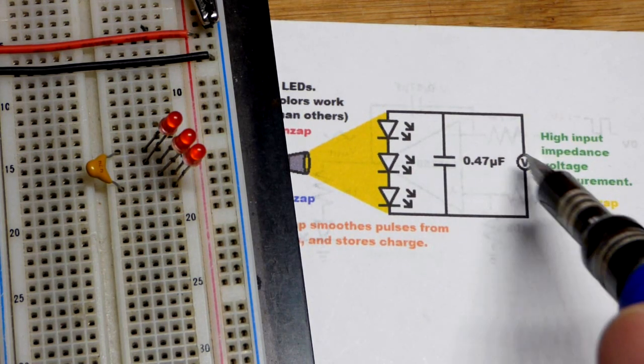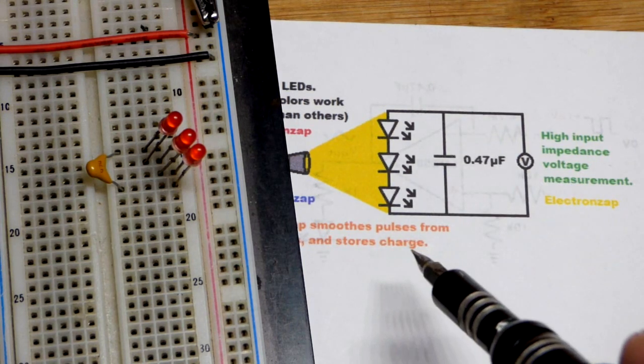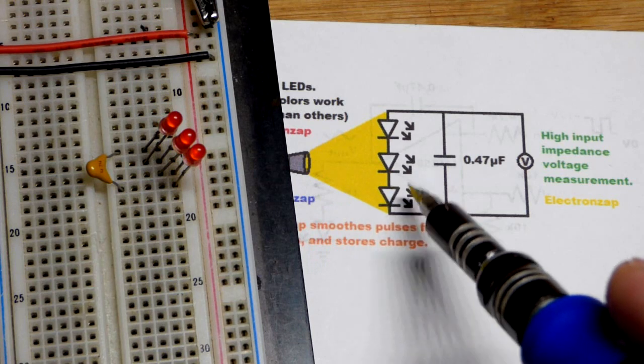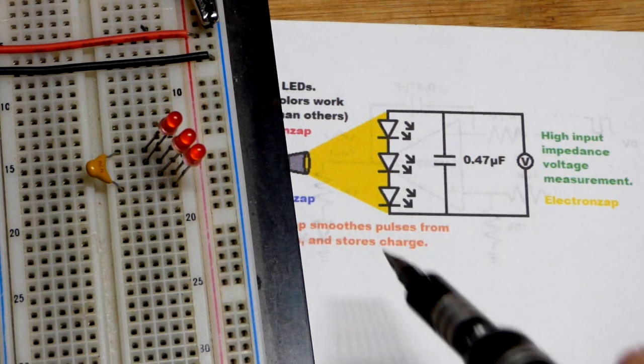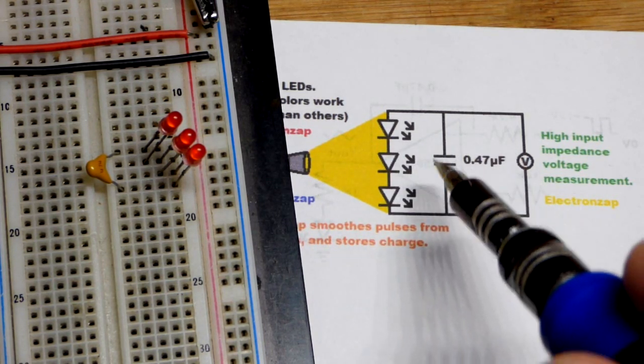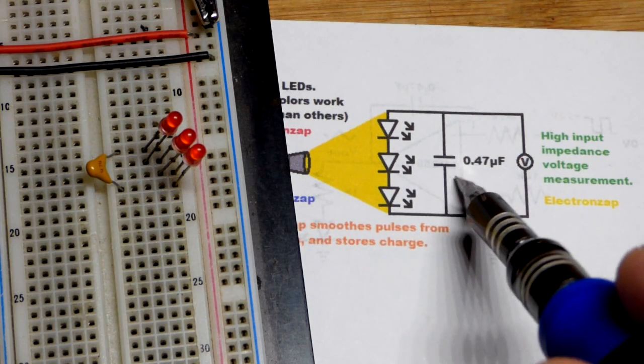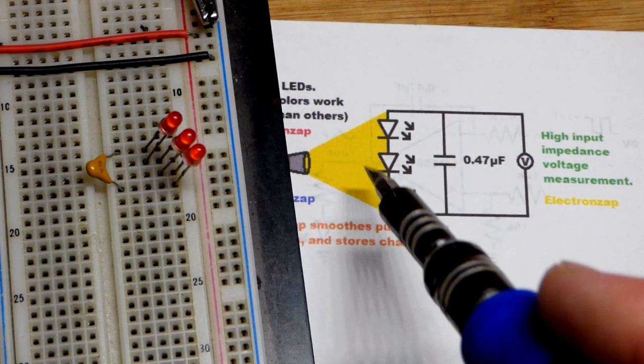So the light would charge the capacitor and it would hold the charge long enough for the oscilloscope to read the voltage for the most part. But also you could use something like this—in fact, solar panels usually charge a battery to be used later on, and so we're kind of simulating that a little bit too with the capacitor.